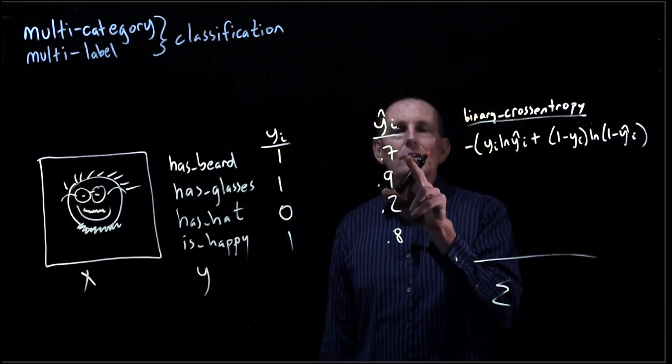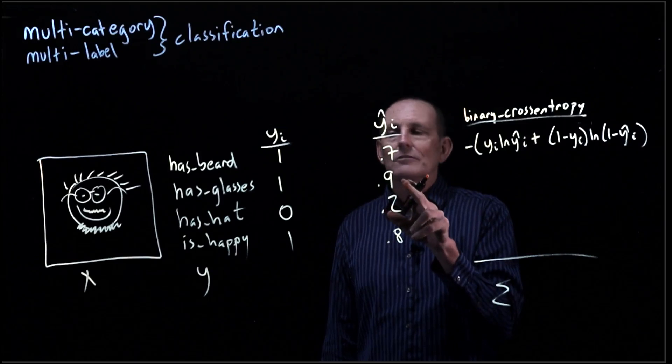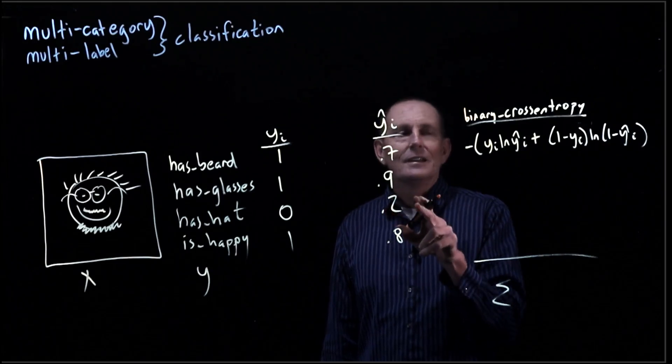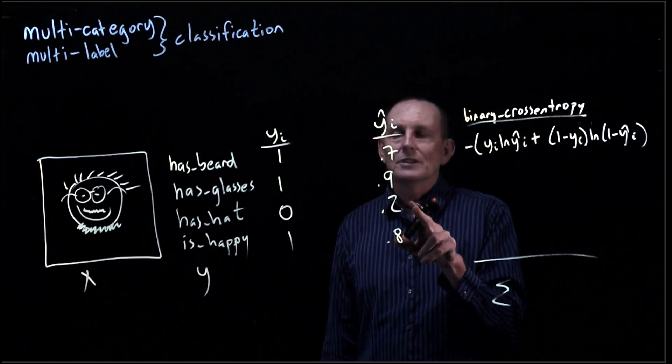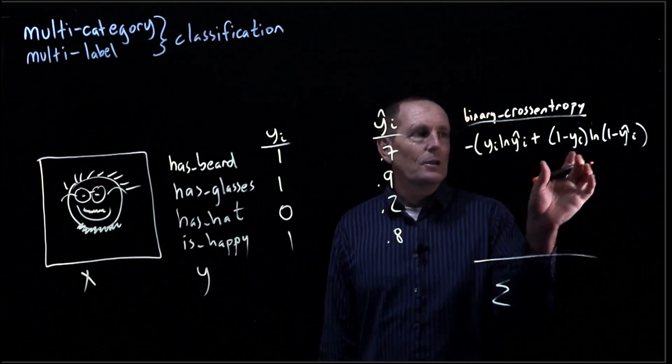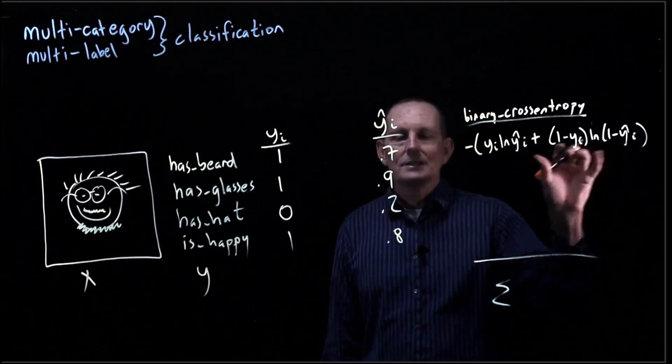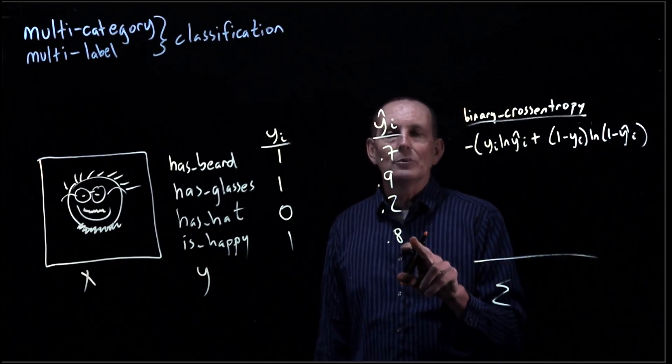So this one is going to be equal log of negative log of 0.7, negative log of 0.9, negative log of 0.8, right? Because we're going to be using this term instead, and negative log of 0.8.